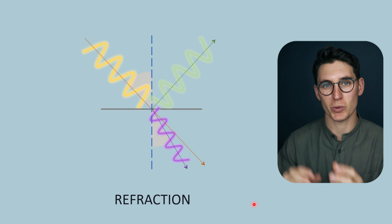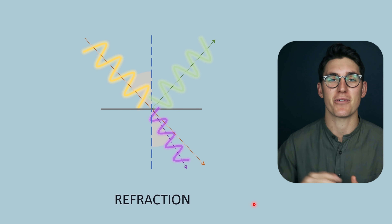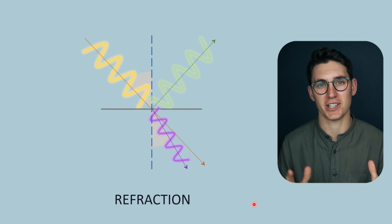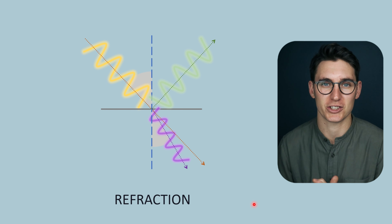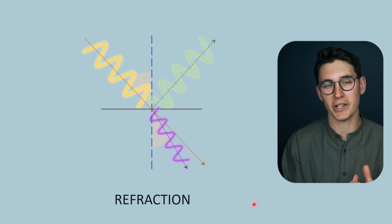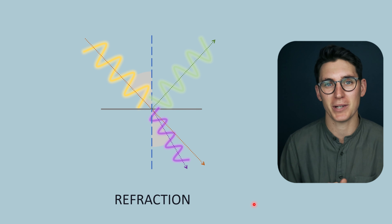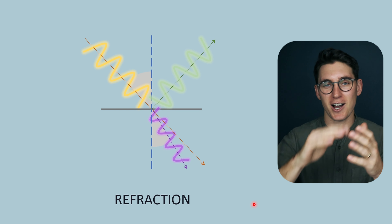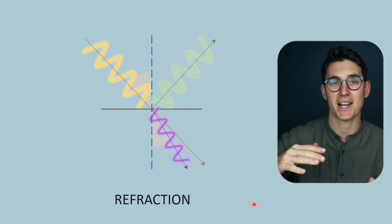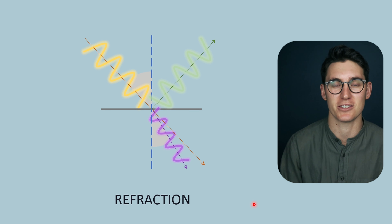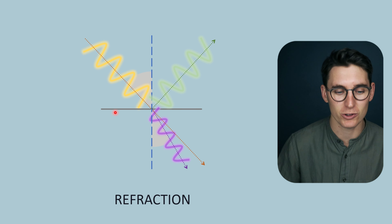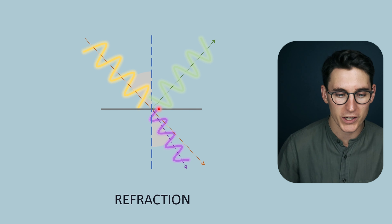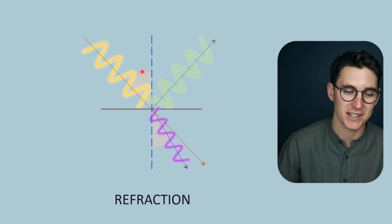The first interaction between ultrasound and matter we've looked at is reflection. We can divide reflection into perpendicular reflection, specular reflection, and non-specular or diffuse reflection. In perpendicular reflection, we use differences in acoustic impedance values for different tissues to determine how much of the incident ultrasound pulse is reflected back towards our transducer and how much is transmitted through the tissue. In specular reflection, when ultrasound comes in at an angle to a large flat surface, we get a reflection at an angle equal to the incidence angle.